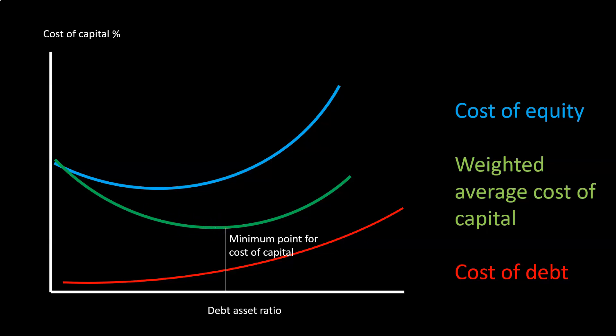At some point the WACC goes back up. The counterbalancing happens because of the tax impact — interest is deductible — but as you take on more debt, shareholders want a higher return. Also, the cost of debt itself increases as risk rises: you could face bankruptcy risk, credit rating agencies may downgrade you from triple-A to double-A, which increases interest rates. So past a certain point, increasing debt raises risk and drives up borrowing costs.